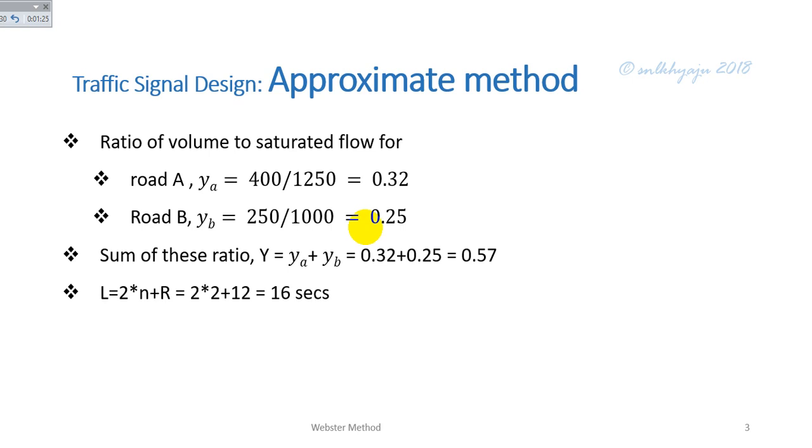The total loss time L is calculated by the relation L equals 2 times N plus R, where R is the total all red time given as 12 seconds. Therefore total loss is calculated as 16 seconds.